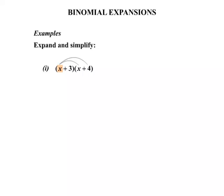Drawing those loops in will remind us to multiply by each of those terms. So that will take care of the x. Then we move to the next term in the first bracket, the positive 3, and we're going to multiply by each term in the other bracket as well.